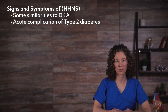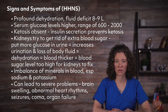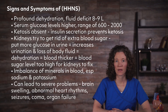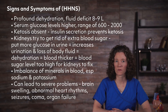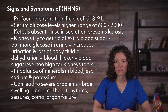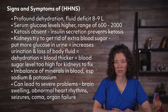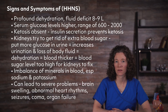Hyperglycemic hyperosmolar non-ketotic syndrome, or HHNS, has some similarities to DKA but is an acute complication of type 2 diabetes. Key differences include profound dehydration with fluid deficit as high as 8 to 9 liters, and blood sugar levels are much higher — serum glucose levels in the range of 600 to 2000. Ketosis is absent because patients with type 2 diabetes have enough insulin secretion to prevent ketosis. The kidneys try to get rid of the extra blood sugar by putting more glucose into the urine, which increases urination and loss of body fluid, causing dehydration.